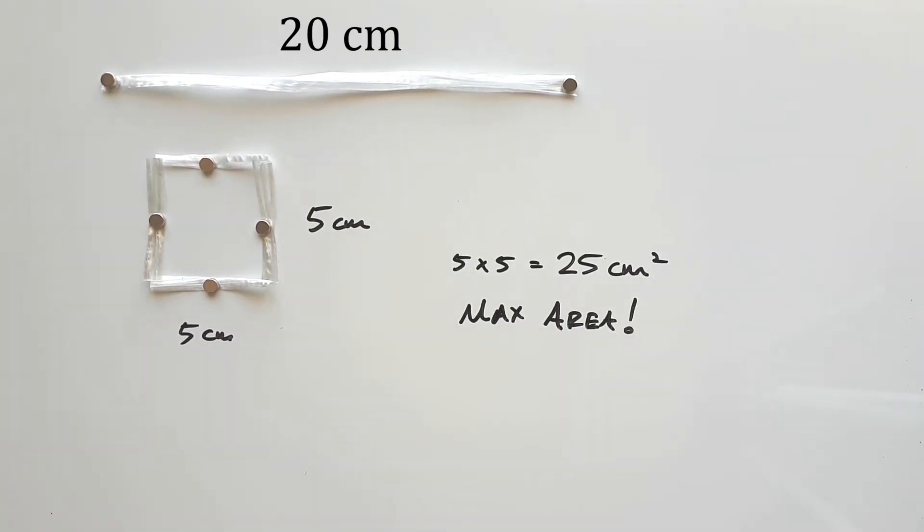In other words, if I were to paint the inside of this rectangle, I would use more paint than any other rectangle I can make with this piece of string. But why is it a square? Can it not be any other shape?